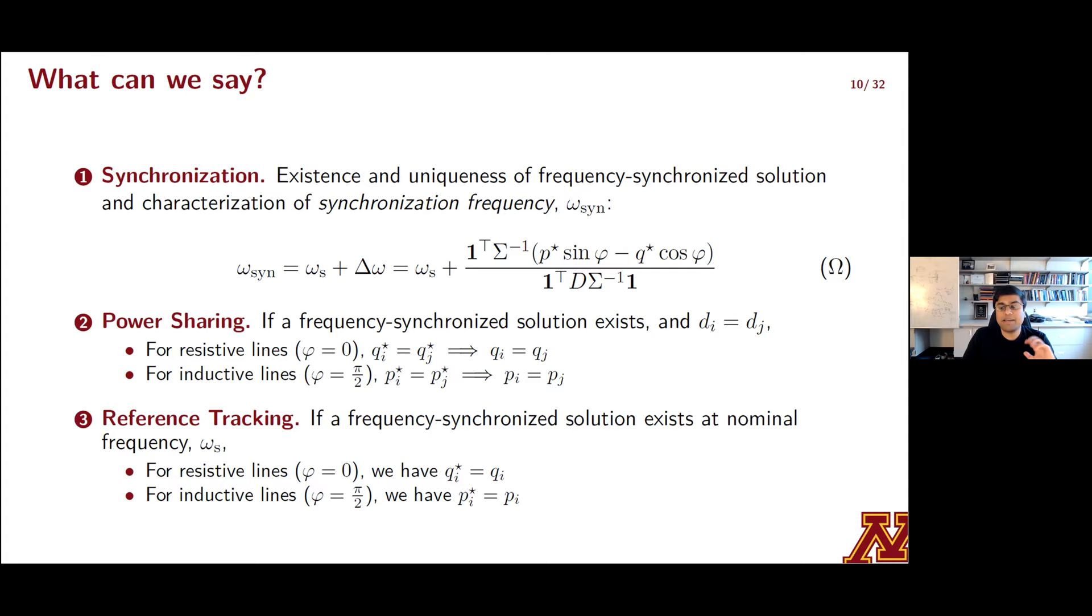And then finally, we consider this idealized reference tracking scenario. So in several of our internal deliberations, Deepak Diwan has frequently brought up the issue of how do you validate or how do you certify that IBRs are actually doing what they are set out to do? And here's one small piece of answering that question. You can guarantee that references will be tracked. In other words, that real and reactive power outputs of the GFMs will coincide with their commanded references in some of these extreme edge cases for resistive networks, inductive networks, if the references at a system level are balanced. So you have to have the system level property to guarantee something at the nodal level.